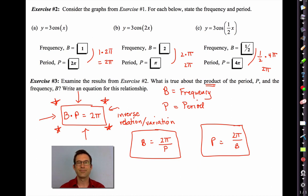Sometimes people will rearrange it by dividing both sides by P. Sometimes people will rearrange it by dividing both sides by B. But I would suggest the most important one to remember is B times P equals 2π. We're going to use that quite a bit. Inverse variation. As the frequency goes up and the frequency is what's multiplying x, the period goes down, and vice versa.